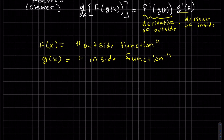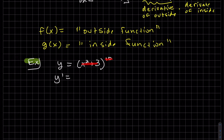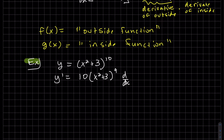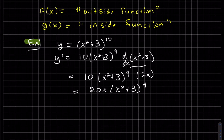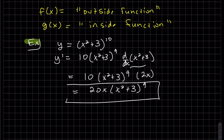So we're going to work on some examples. Our first example uses the power rule. The outside function is the 10th power; the inside function is x squared plus 3. So it's the derivative of the power — power rule — we keep our inside function, times the derivative of the inside. The derivative of the inside is just 2x. We copy this and then simplify. Watch your algebra — this is where you do not want to make algebra mistakes.